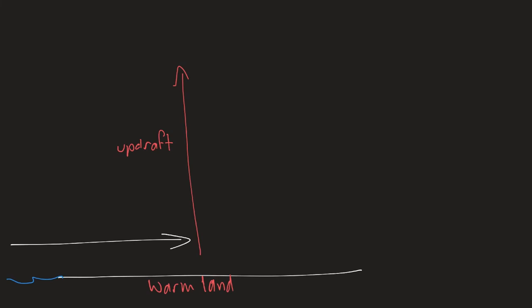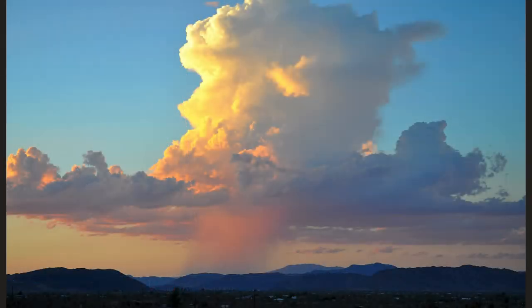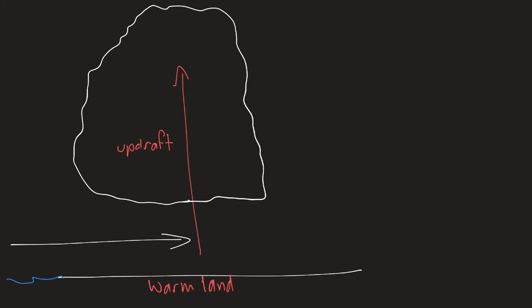As this moist air gets further into the atmosphere, it condenses, forming a large vertical cloud. The top of the cloud is so cold that it's below freezing, so ice forms in the top of these clouds. The ice, being heavier, starts to fall down through the cloud, creating a downdraft.